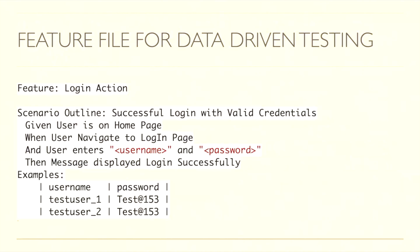Here we can see one feature file where the Scenario Outline is 'Successful login with valid credentials'. Steps include: user is on home page, user navigates to login page, user enters username and password — where username and password are in angle brackets — and then the message displays 'login successfully'. In the Examples section, username and password are used as headers with pipe separators, and we pass two test data sets: test user one and test user two along with their passwords.